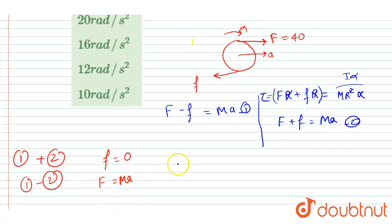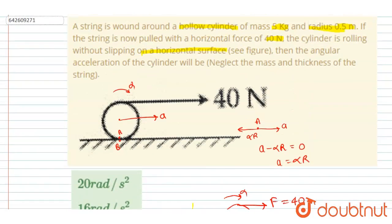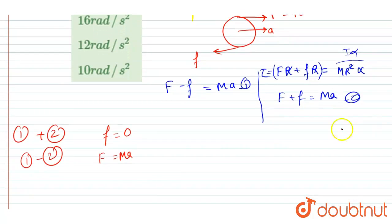So just put the value of f in this expression, right? Like we know that alpha*r is equals to a. Alpha*r is equals to a. And if you've seen the question, force is given and r is given and mass is also given.